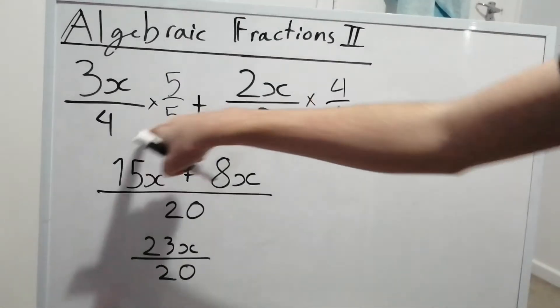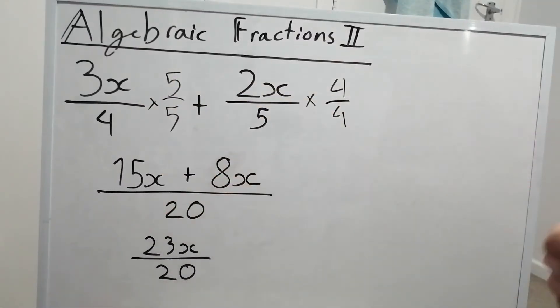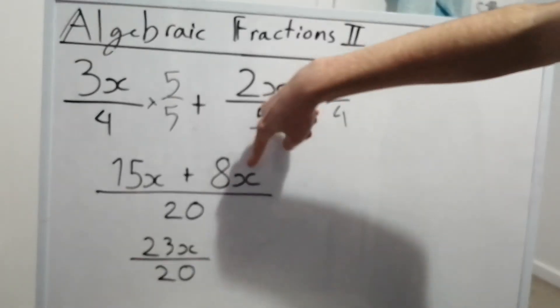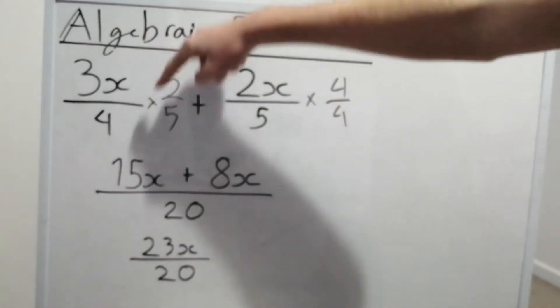So this times 4 is 20. This times 5 is 20. So we've got the 20 there, that goes down there. This times 4 is 8x. And this times 5 is 15x there.